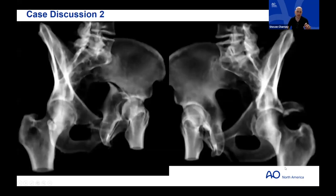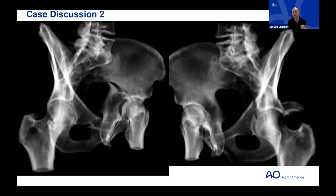John adds that even when you have the technology, Judet oblique quality is very tech-dependent. That said, for less-displaced transverse patterns, the Judet views almost act as a stress view — positioning the patient on that hip may unveil occult instability that pushes you down a different treatment algorithm. Steve agrees: it is a stress view, though also a painful one for patients with unstable fractures.